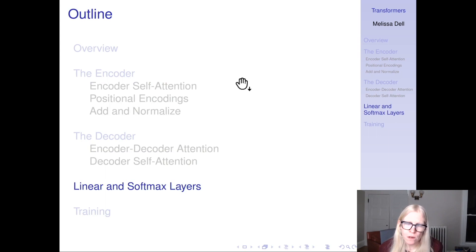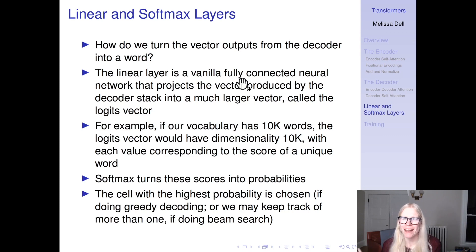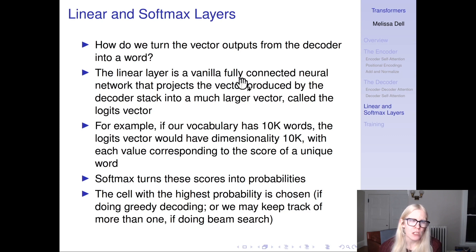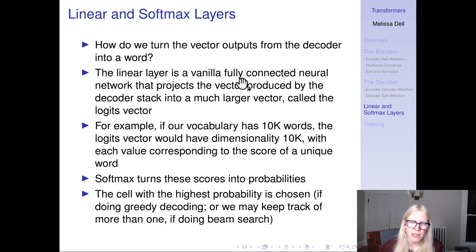How do we turn the vector outputs from the decoder into a word? There's a linear layer — just a vanilla fully connected neural network, analogous to what we saw in AlexNet or the introductory videos by Grant Sanderson. That's going to project the vector produced by the decoder stack into a much larger vector called the logits vector. If our vocabulary has 10,000 words, the logits vector would have dimensionality 10,000, with each value corresponding to the score of a unique word. Softmax turns these scores into numbers between 0 and 1, and the cell with the highest value is chosen — if doing greedy decoding — or in reality you'd probably do beam search and keep track of more than one possibility, like we discussed in the last lecture.